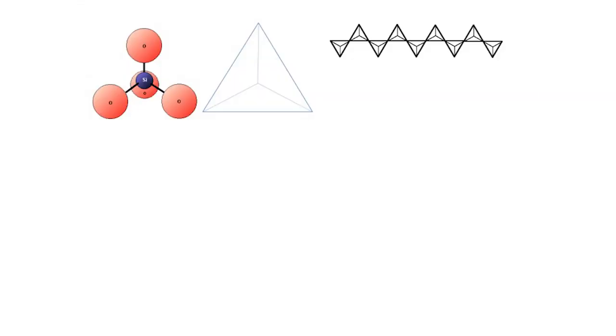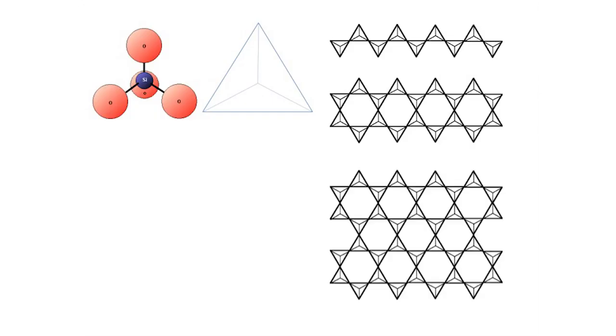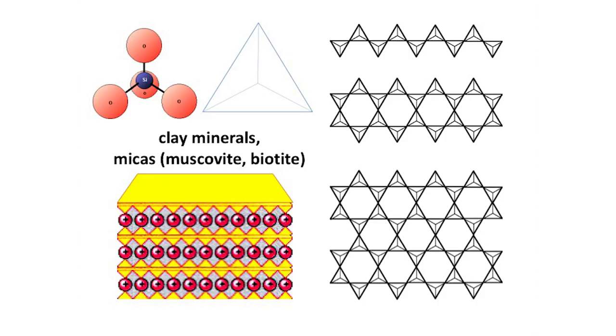You can stick these tetrahedra together in a variety of ways. You can have individual tetrahedra — that's one type of rock. You can stick all the tetrahedra in a sequence, in a row, and get a stringy mineral. You can stick them together in two rows for a different kind of mineral. You can even put them together in sheets, and then the sheets can be laid on top of one another, attracted to each other by electrical charges.